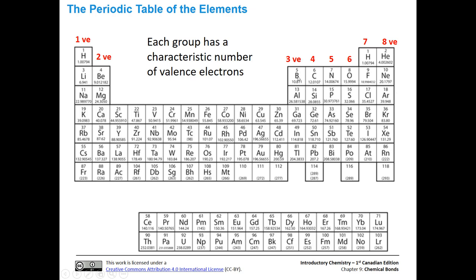Skipping over to the other side of the transition elements: boron, aluminum, gallium, and indium all have three valence electrons. Carbon, silicon, and germanium have four valence electrons. Nitrogen and phosphorus have five. Oxygen and sulfur have six. All the halogens have seven. Finally, the noble gases have eight valence electrons, with the exception of helium, which has two and is satisfied with that.